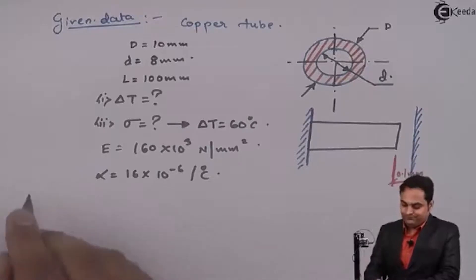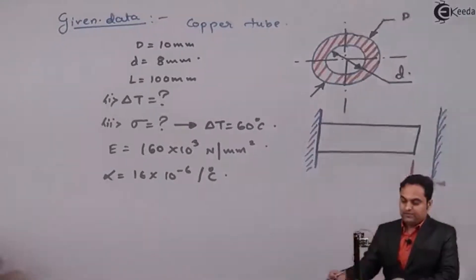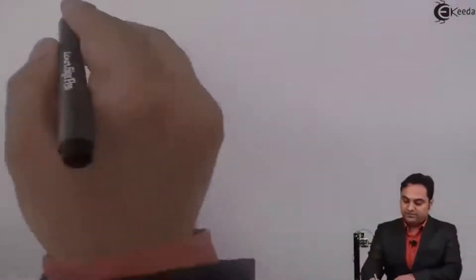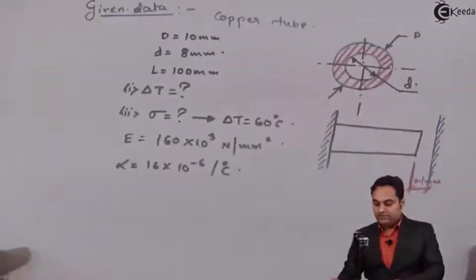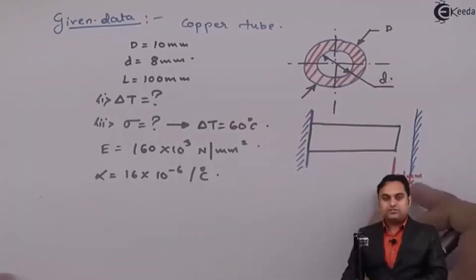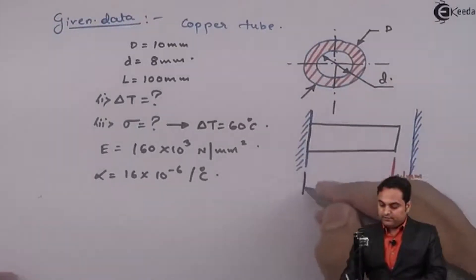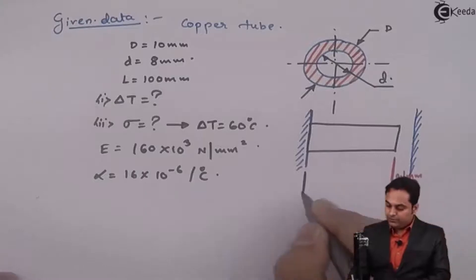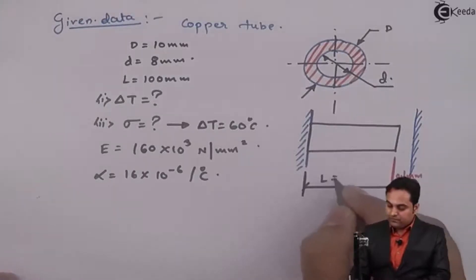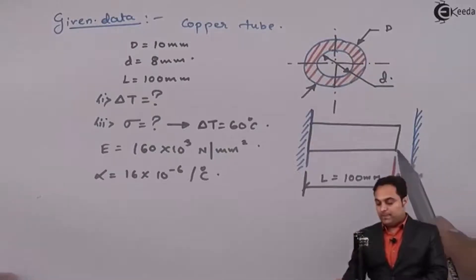Now this is the question we have with these much data available. Let us try to get the solution to this problem. I'll write the solution onto the next page. Now in the solution, since they are saying to calculate how much will be the temperature which will close this gap and the length of the copper tube is given, that is 100 mm.